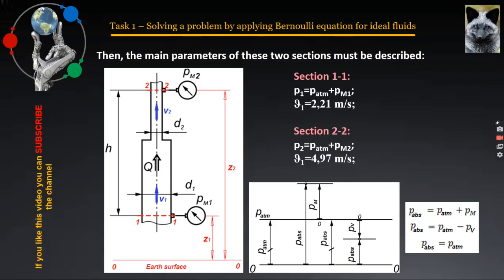For a faster determination of Z, it can be assumed that the line from which this parameter is indicated is not the earth surface, but the section that is closer to the earth. Then, for this section, it is assumed that Z will be equal to zero and for the other, the one that is farther from the earth surface, Z will be equal to H. If this method for determining Z is applied to this specific task, it becomes clear that Z1 will be zero and Z2 will be H, which is equal to 5 meters. Now, let's move on to the next slide.